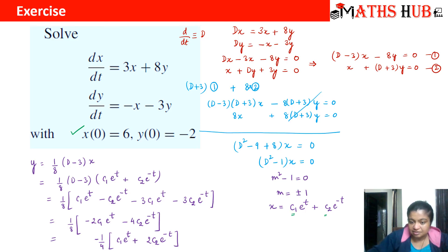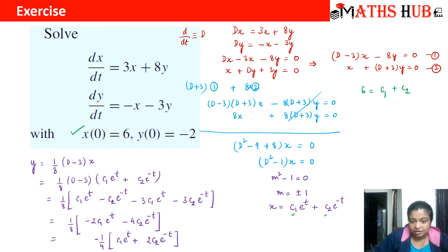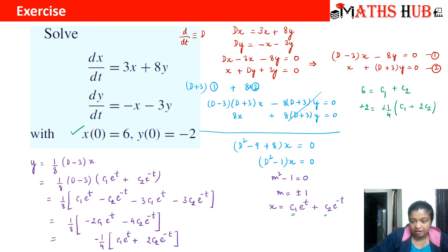Using x(0) = 6: substituting t = 0 into x = c₁e^t + c₂e^(−t) gives c₁ + c₂ = 6 — this is equation A. Using y(0) = −2: substituting t = 0 into y = −(1/4)(c₁e^t + 2c₂e^(−t)) gives −2 = −(1/4)(c₁ + 2c₂). Cross-multiplying gives c₁ + 2c₂ = 8 — this is equation B.